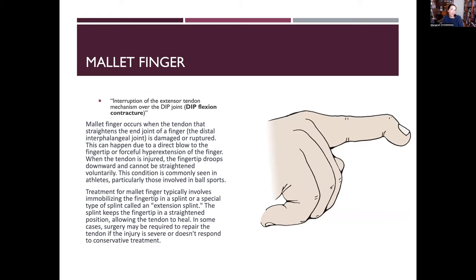Mallet finger is an interruption of the extensor tendon mechanism over the DIP joint, causing a DIP flexion contracture or inability to actively extend the finger. It occurs from a direct blow to the fingertip or forced hyperflexion, rupturing the extensor tendon so the finger droops and cannot be straightened voluntarily. It's commonly seen in ball sport athletes.